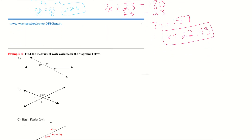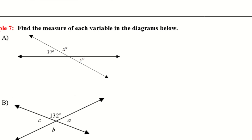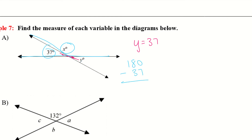Example 7: we want to find the variables, and this is a combination of linear pairs and vertical angles. I usually look for vertical angles first because those are the easiest — they are the exact same on both sides. So Y equals 37, because they're vertical angles. Next, we have this linear pair with 37 and X — so I'll subtract 37 from 180. X equals 143 degrees.